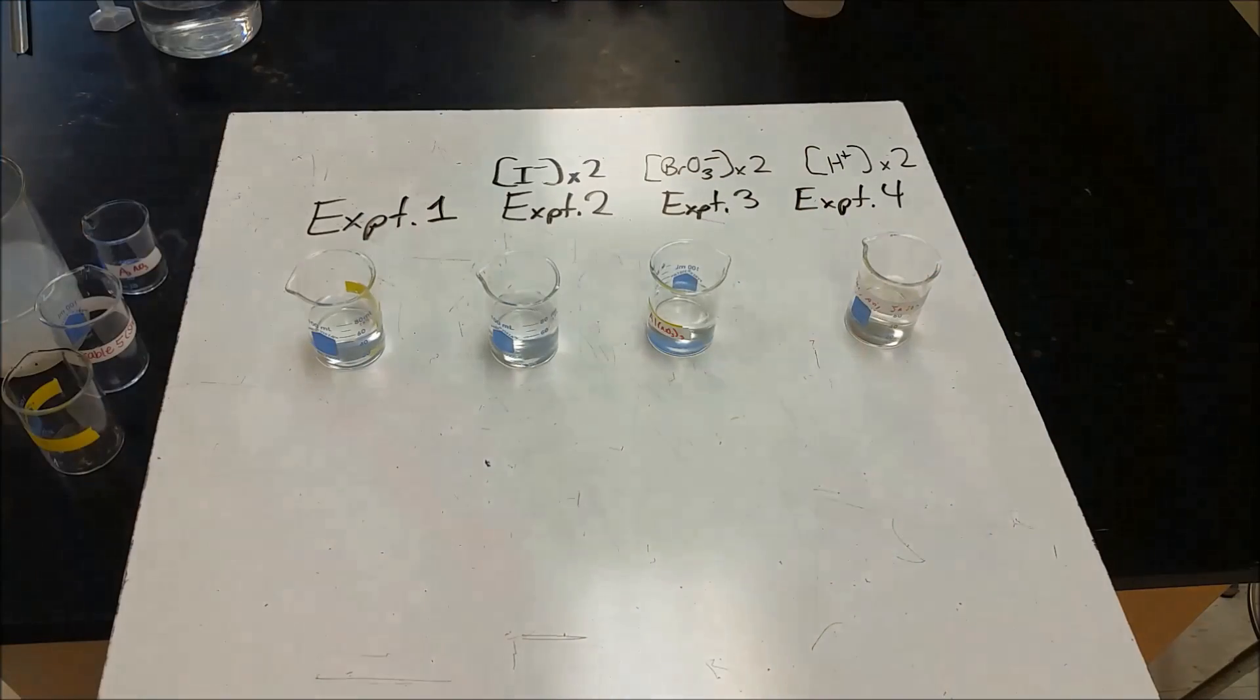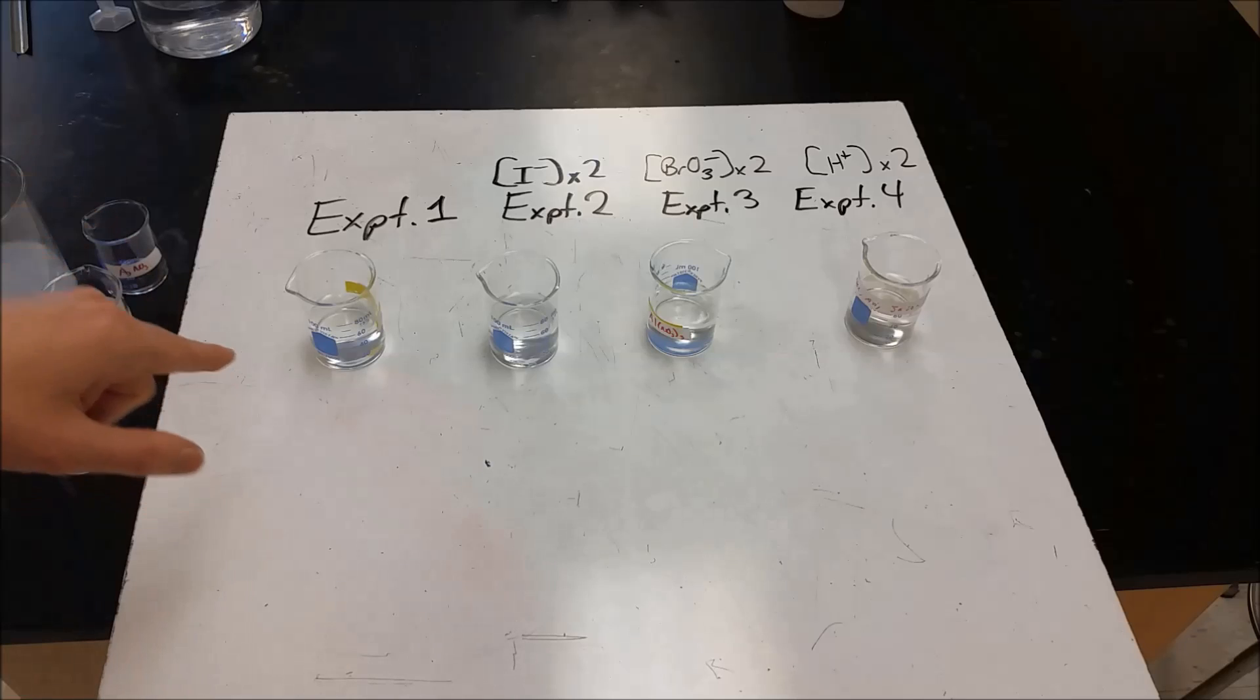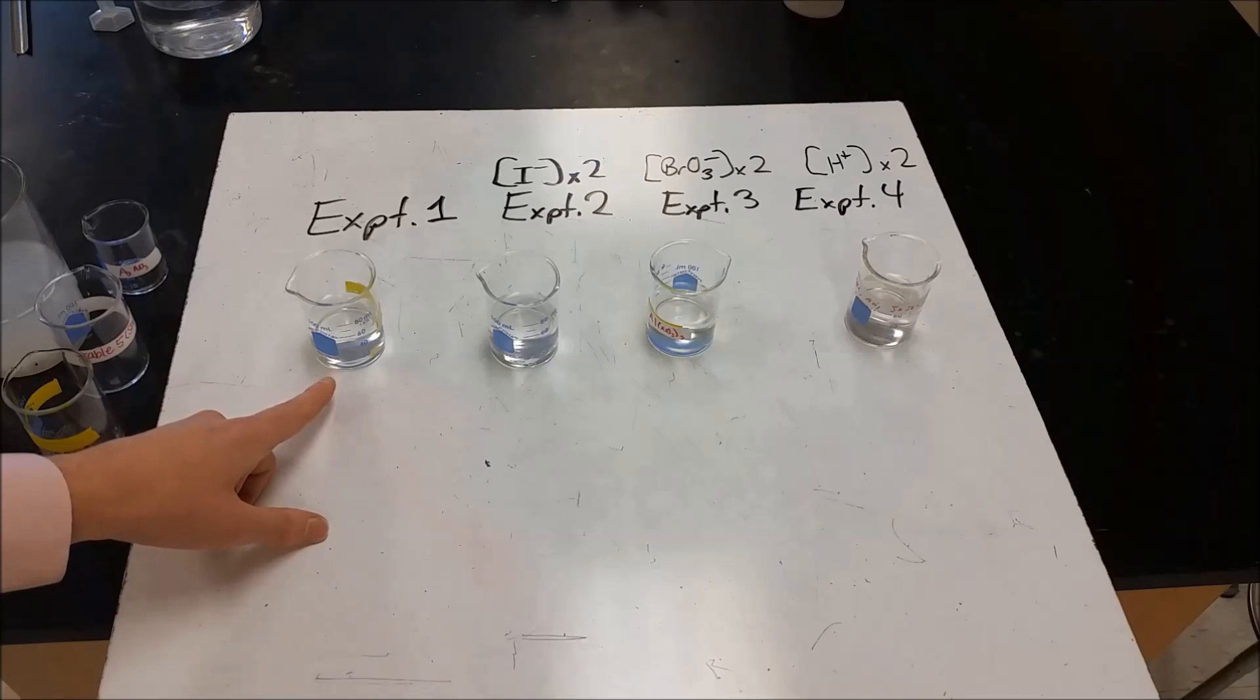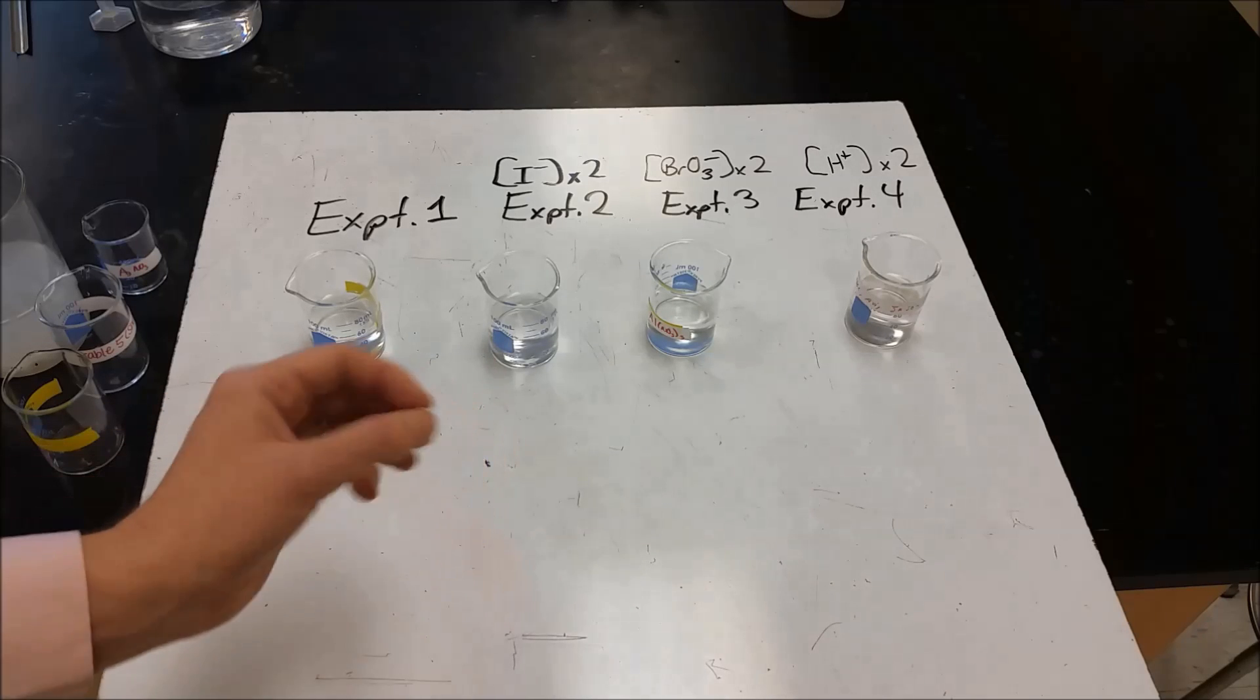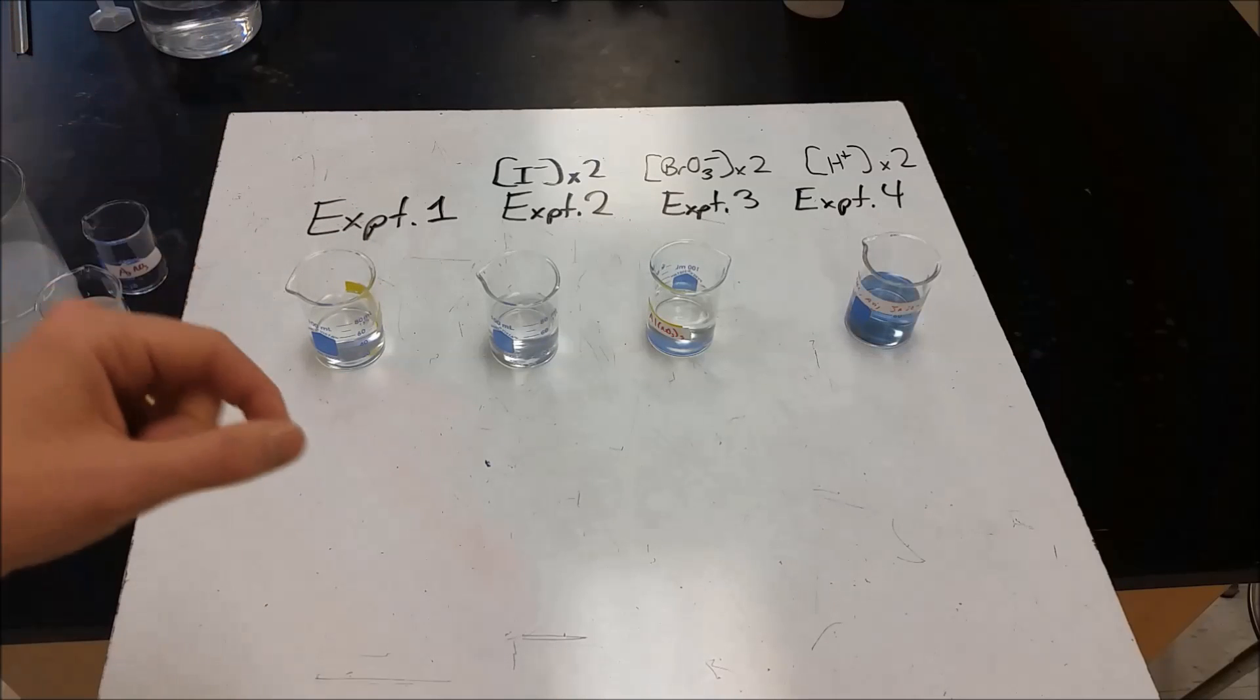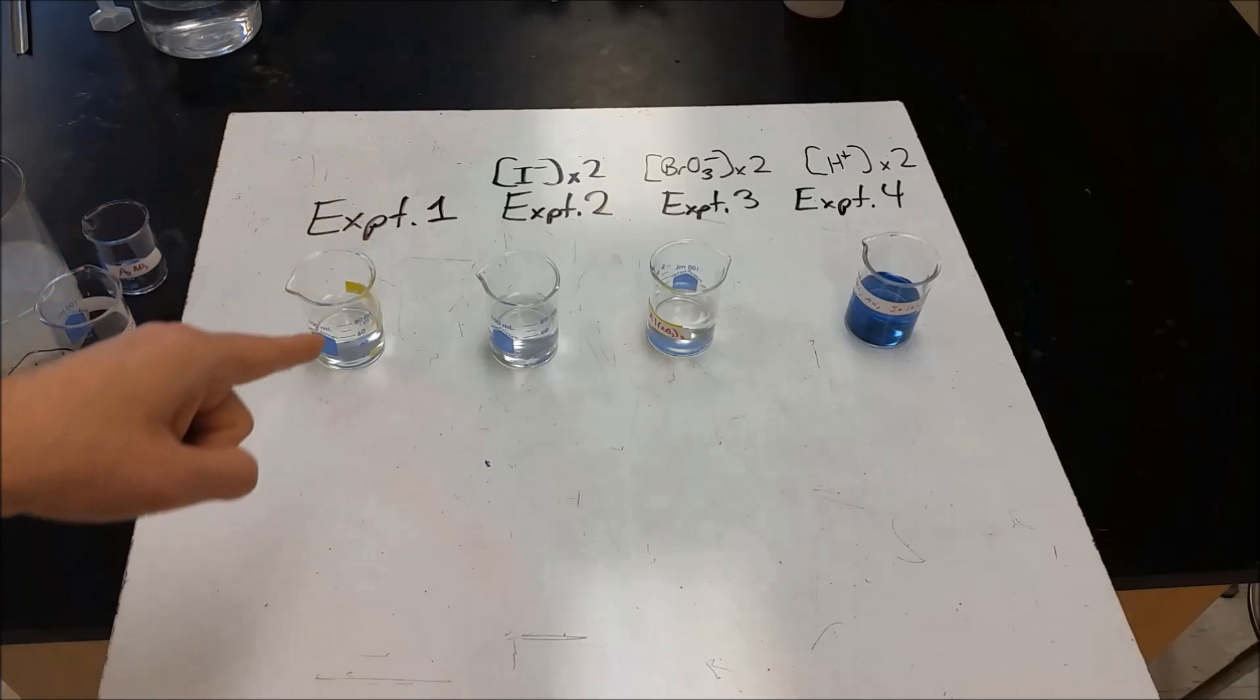We're going to stir. So what we've done is in experiment one, we did 10 milliliters of thiosulfate in beaker one with 10 milliliters of potassium iodide and 10 milliliters of water. Then in the second beaker, we had 10 milliliters of hydrochloric acid and 10 milliliters of potassium bromate. So we had 50 milliliters total. In the second experiment, we dropped the 10 milliliters of water, but doubled the amount of iodide. So the total concentrations are the same for everything except for iodide is now double.